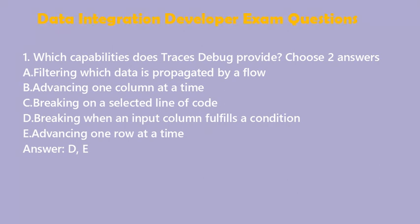Question 1: Which capabilities does Traces Debug provide? Choose two answers. A. Filtering which data is propagated by a flow. B. Advancing one column at a time. C. Breaking on a selected line of code. D. Breaking when an input column fulfills a condition. E. Advancing one row at a time. Answer: D, E.